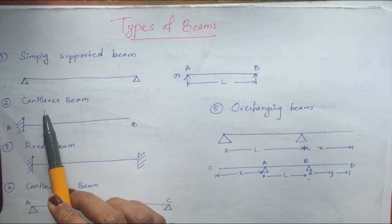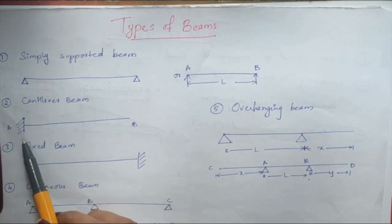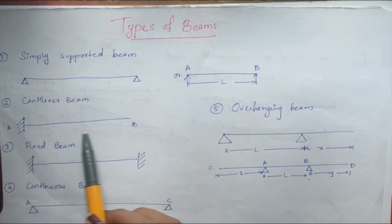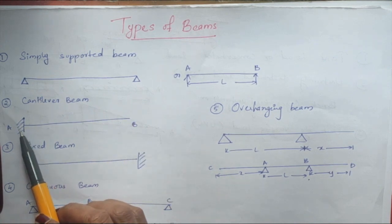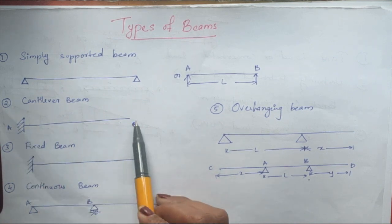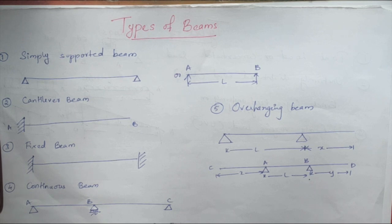Next one is cantilever beam. A cantilever beam has a fixed support at one end and the other end is free. An example is a sunshade in a building — one side is fixed and the other side is hanging freely.